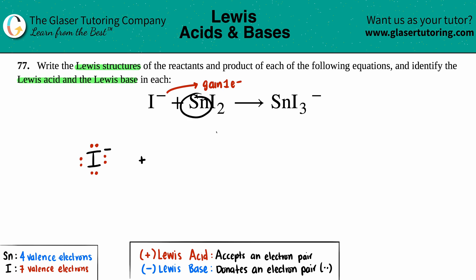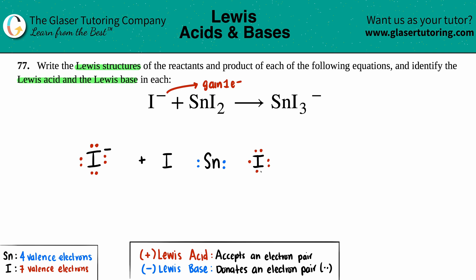Next, SnI₂. The least electronegative element goes in the middle, so that's tin (Sn), surrounded by two iodines — one on each side. Tin has four valence electrons: one, two, three, four. Then each iodine has seven valence electrons: one, two, three, four, five, six, seven for each.